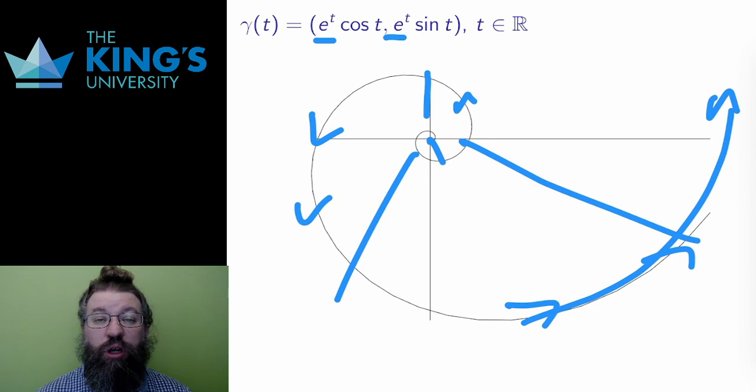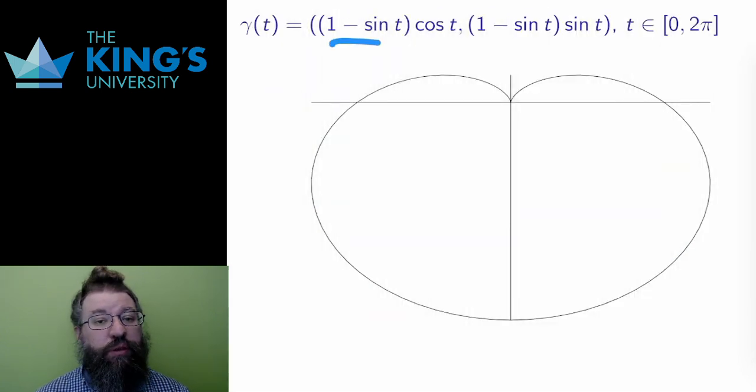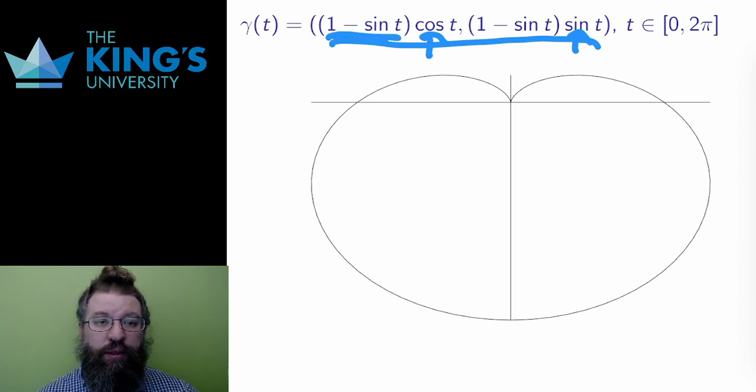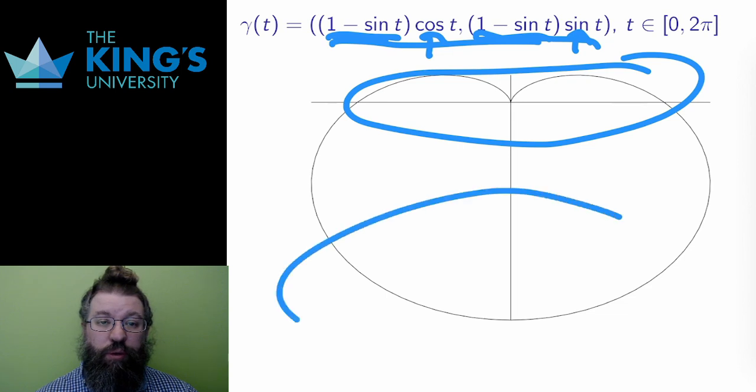Finally, here is another complicated curve based a little bit on the circle. This is called the cardioid, since it resembles a heart. It has the cosine and sine of the circle, but the radius is changed by 1 minus sine t. And this makes the radius small above the x-axis and larger below. The path around the curve is still counterclockwise.